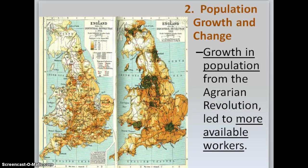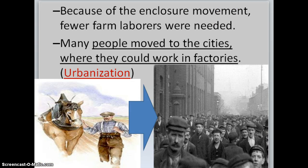Population growth caused major social changes throughout England. Because of the Agrarian Revolution, families were so healthy that they no longer needed 10 to 15 kids — maybe only 5 or 6 to run the farm. The extras were sent off to the city to find work. Because of the enclosure movement, far fewer farm laborers were needed, so many people moved to cities to work in factories. This was called urbanization.